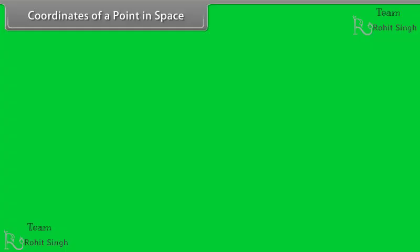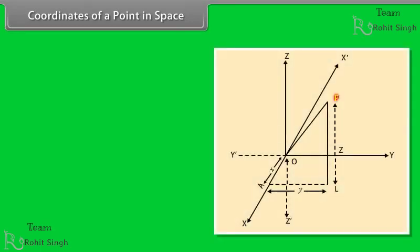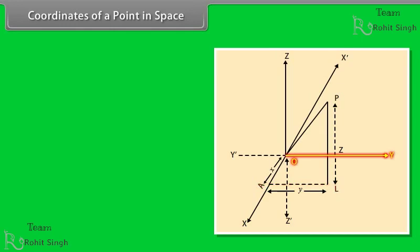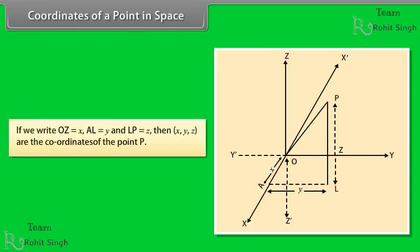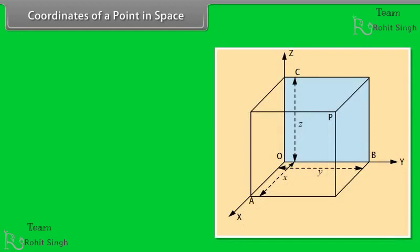Coordinates of a point in space: Let P be any point in space. Through P, draw perpendicular PL on the XY-plane, meeting this plane at L. Through L, draw a line LA parallel to Oy, cutting Ox at A. If we write OA = x, AL = y, and LP = z, then x, y, z are the coordinates of point P. Again, if we complete a rectangular parallelepiped through P with its three edges OA, OB, and OC meeting each other at O and OP as its main diagonal, then the lengths OA, OB, OC — that is, x, y, z — are called the coordinates of the point P.